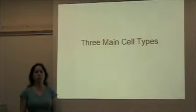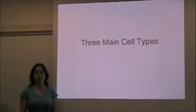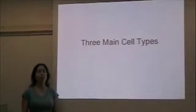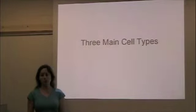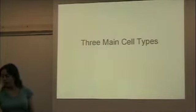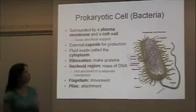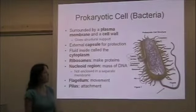We're going to go through the three main types of cells and some of the structures that are important in each cell type. We're going to start off with the simplest, the prokaryotic cell, using the example of a bacteria.